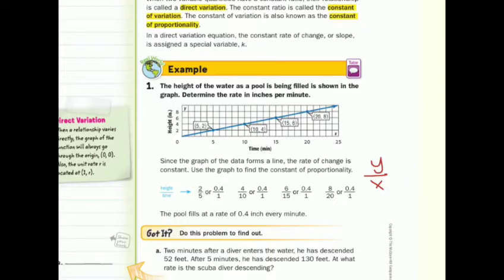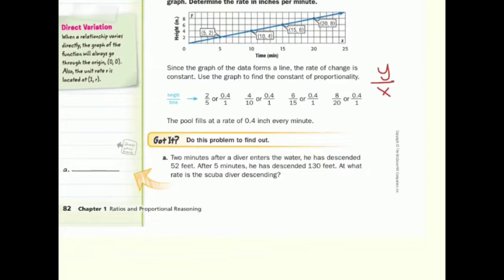Got it. Let's find out. Two minutes after a diver enters the water, he descended 52 feet. After five minutes, he has descended 130 feet. At what rate is the scuba diver descending? For this question, we can take a look at our 52 over 2 minutes, which simplifies to 26 over 1. And we can do 130 over 5 minutes, which also simplifies into 26 over 1. So we can say that he is descending 26 feet per minute.